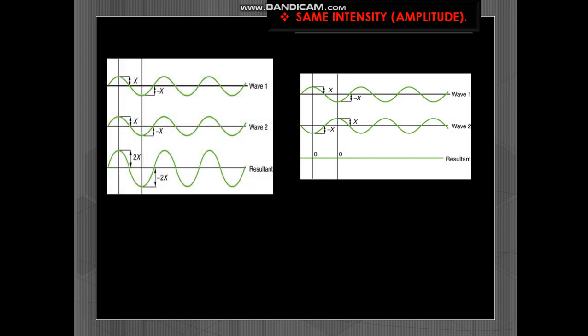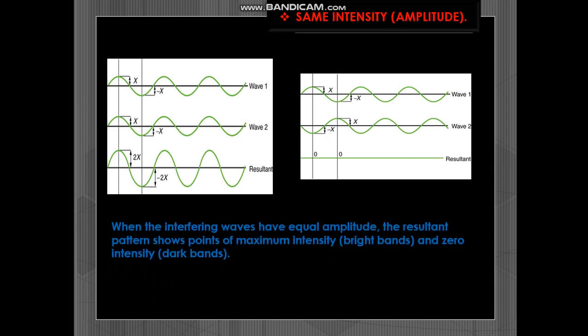If they are of the same intensity or amplitude then either you get zeros or you get the maximum 2x. So when the interfering waves have equal amplitude the resultant pattern shows points of maximum intensity bright bands and zero intensity that is dark bands.